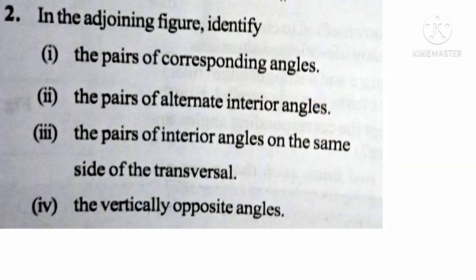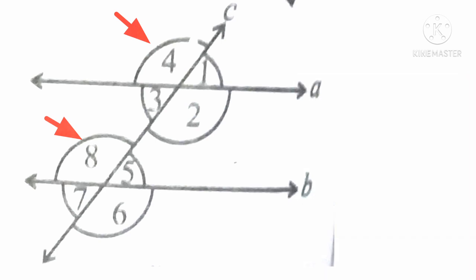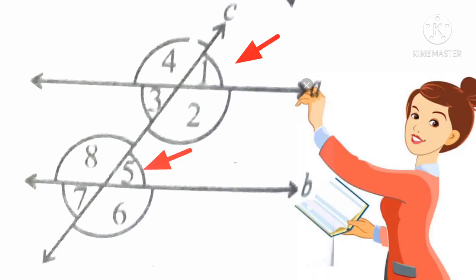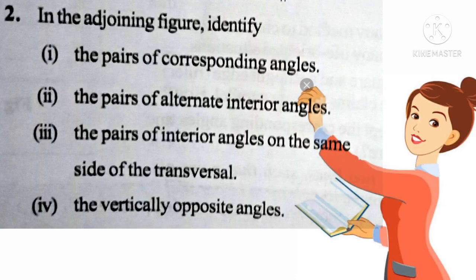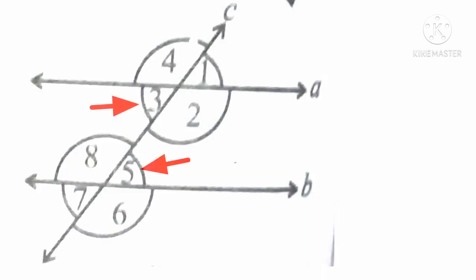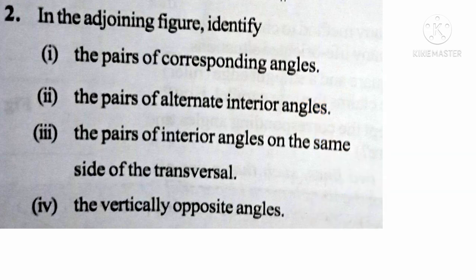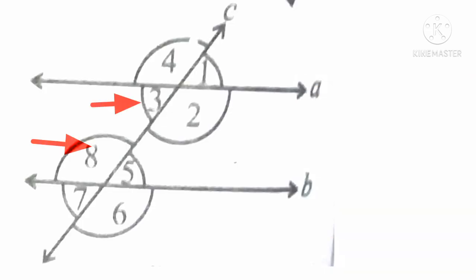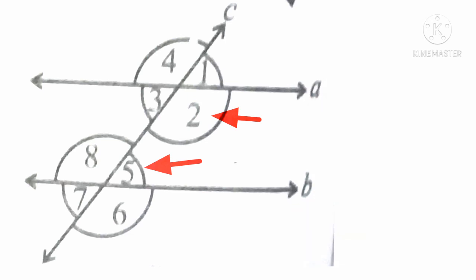In the adjoining figure, identify the pair of corresponding angles. The corresponding angles are: angle 4 equals angle 8, angle 1 equals angle 5, angle 3 equals angle 7, and angle 2 equals angle 6. Second: the pair of alternate interior angles are angle 3 and angle 5, and angle 2 and angle 8. Third: the pairs of interior angles on the same side of the transversal — angle 3 plus angle 8 equals 180 degrees, and angle 2 plus angle 5 equals 180 degrees.